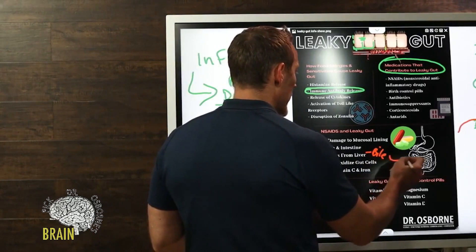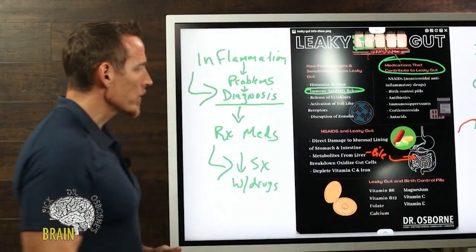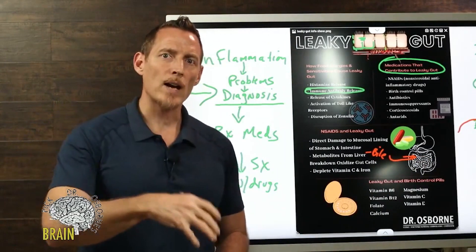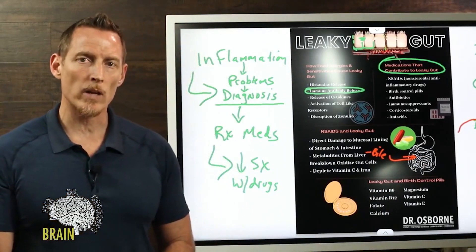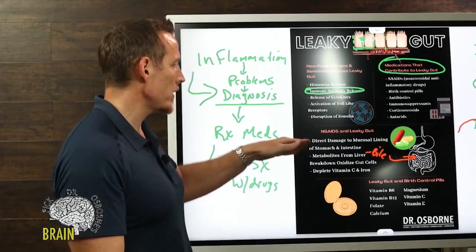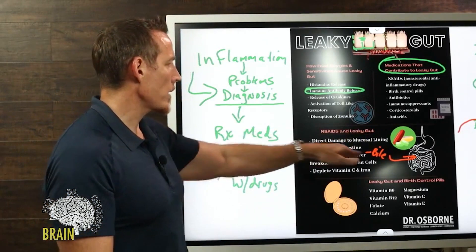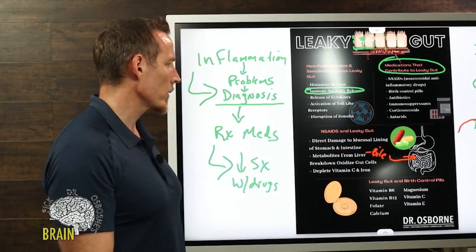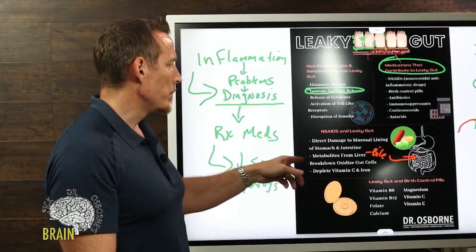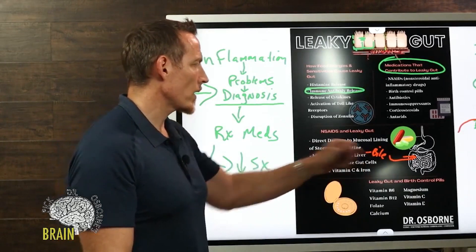The metabolites from the liver end up in your bile, so they're recirculated back to the gut. The toxins and metabolites in the bile have actually also been shown to create damage to the GI tract. So you get an initial direct damage, but then an indirect damage from the metabolites as they're excreted through the bile.